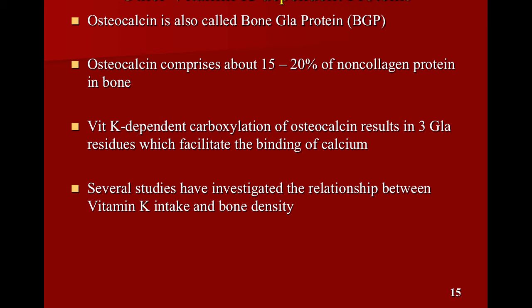So other vitamin K-dependent proteins, we talked about osteocalcin quite a bit. It's also known as bone-gla protein. Osteocalcin actually comprises about 15 to 20% of non-collagen protein in bone. It's actually one of the most common proteins in bone other than collagen. So collagen is the most common protein in bone. Osteocalcin is one of the other most common ones. So vitamin K-dependent carboxylation of osteocalcin results in three-gla residues, which facilitate the binding of calcium. We looked at this before. Several studies have investigated the relationship between vitamin K intake and bone density, and they've looked at osteocalcin carboxylation, and there does seem to be a relationship. There is a relationship between vitamin K intake and the amount of osteocalcin that is carboxylated, and it looks like that can change bone density if a person is not consuming enough vitamin K intake.